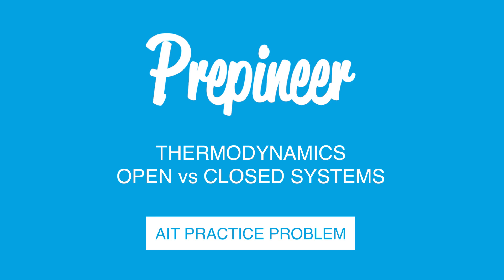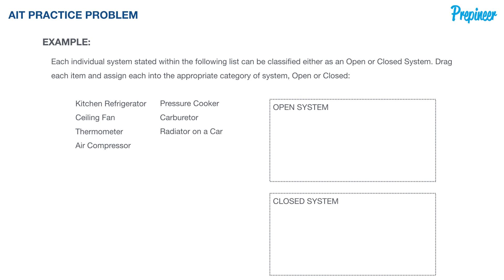Hey, what's going on everyone? It's Justin Dickmeyer here with engineeringtrainingexam.com and preponeer.com. In today's video, we're going to dive into an alternative item type (AIT) practice problem that you may be seeing on your upcoming FE exam. Here's our problem: each individual system within the following list can be classified either as an open or closed system. We have seven systems: a kitchen refrigerator, ceiling fan, thermometer, air compressor, pressure cooker, carburetor, and a radiator on a car.